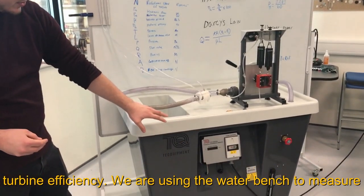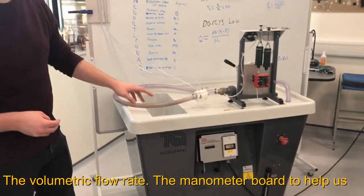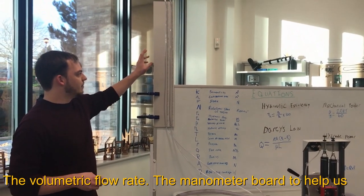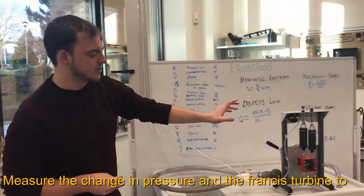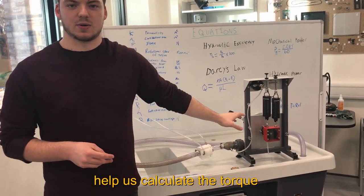We're using the water bench to measure the volumetric flow rate, the manometer board to help us measure the change in pressure, and the Francis turbine to help us calculate the torque.